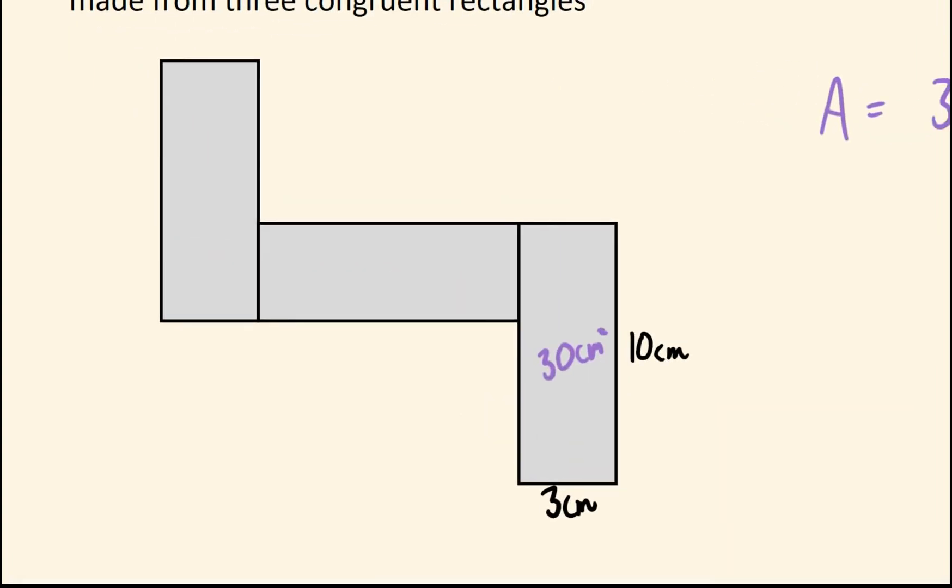And again for the perimeter, I can just fill in all the missing lengths or most simply straight away because I know all these rectangles are the same. The longer lengths are 10 and the shorter lengths are 3. Doing that, I've only got 2 missing lengths that I need to work out for the perimeter.